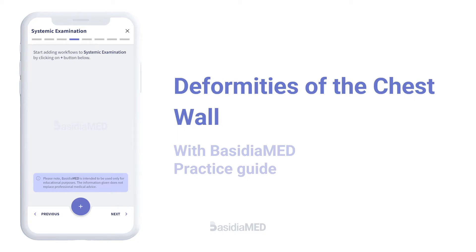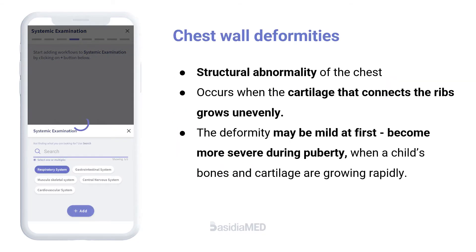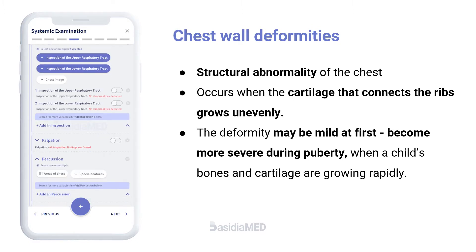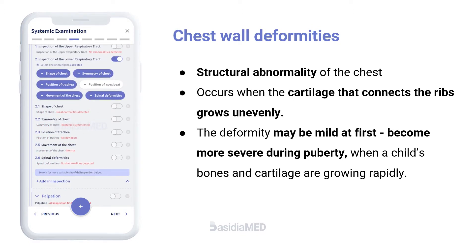Deformities of the Chest Wall. Structural abnormalities of the chest occur when the cartilage that connects the ribs grows unevenly. The deformity may be mild at first and become more severe during puberty when a child's bones and cartilage are growing rapidly.